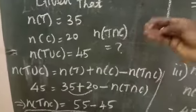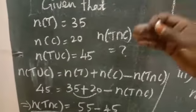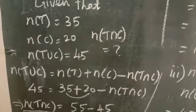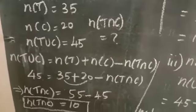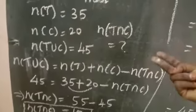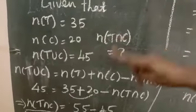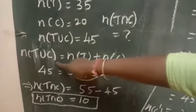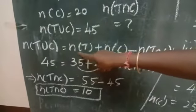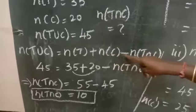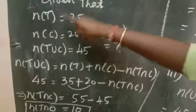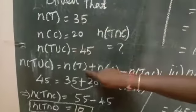We know that the formula: N of A union B is equal to N of A plus N of B minus N of A intersection B. Since we have two topics T and coffee, we rewrite the formula as: N of T union C is equal to N of T plus N of C minus N of T intersection C.